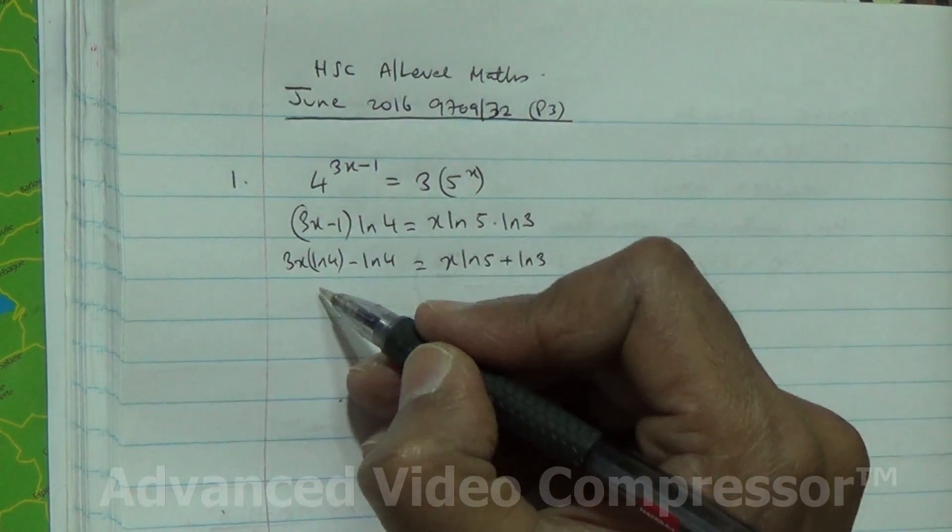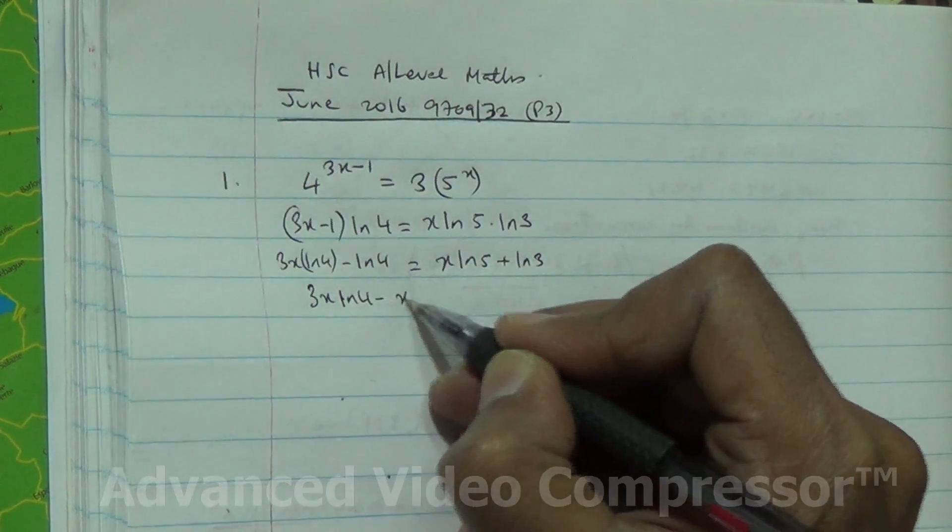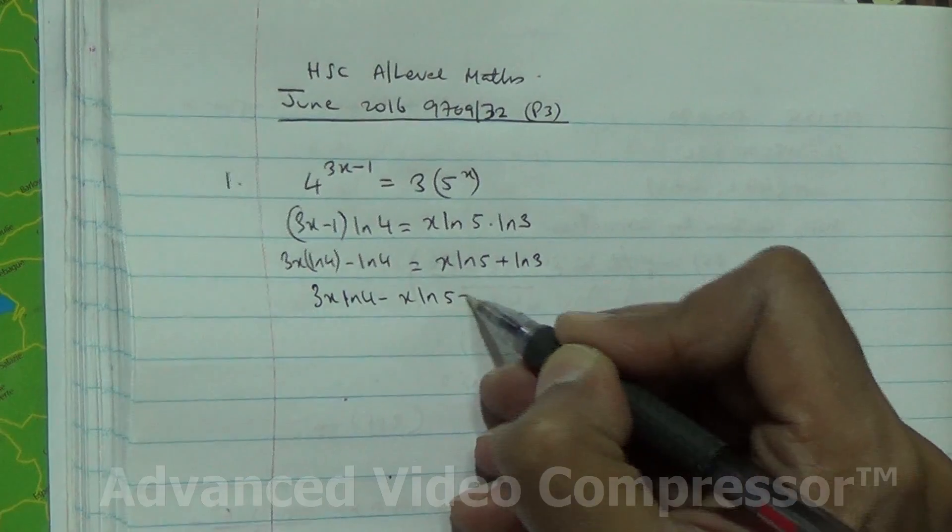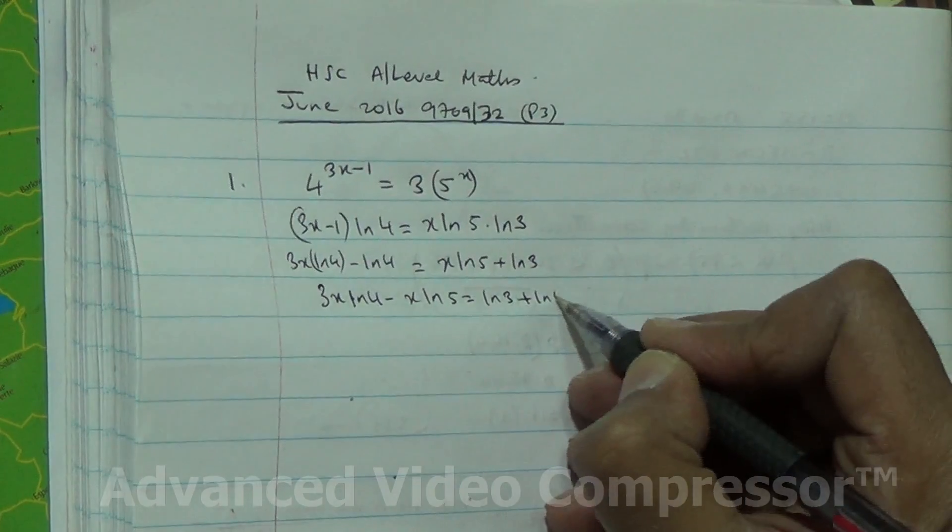So we've got 3x ln 4 minus x ln 5 is equal to ln 3, and you send this one on the other side, becomes plus ln 4.